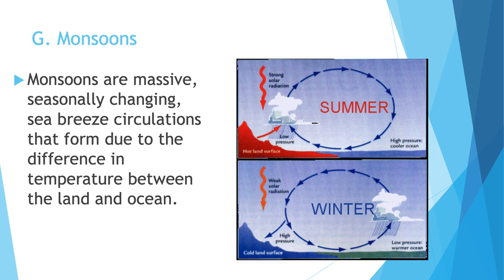Now let's move on to monsoons. They are usually formed in the Indian Ocean on the Asian plate. What they are are massive seasonally changing sea breeze circulations.